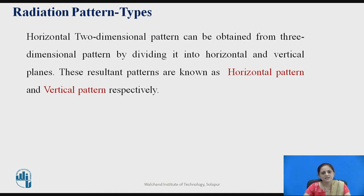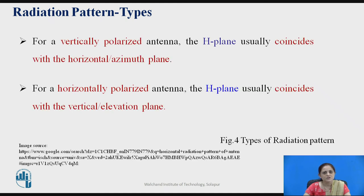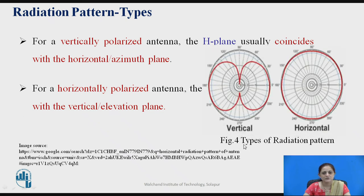The types of radiation patterns can be plotted as the horizontal pattern and the vertical pattern. For a vertically polarized antenna, the H-plane usually coincides with the horizontal azimuth plane. This is an example of vertical and horizontal polarization and the radiation pattern for that antenna.